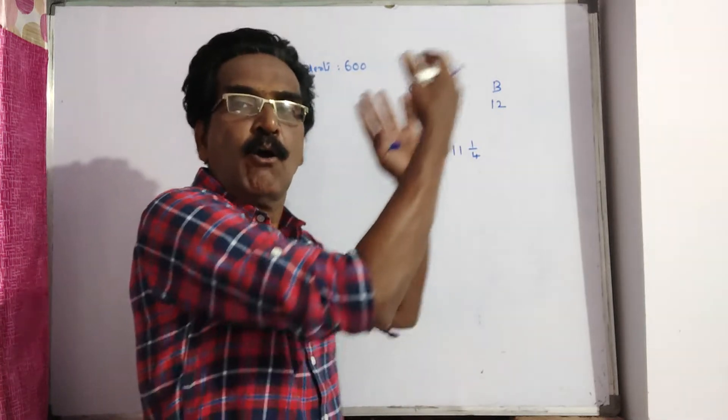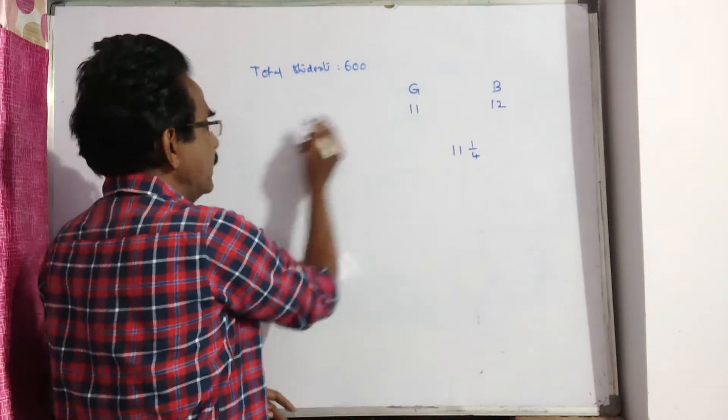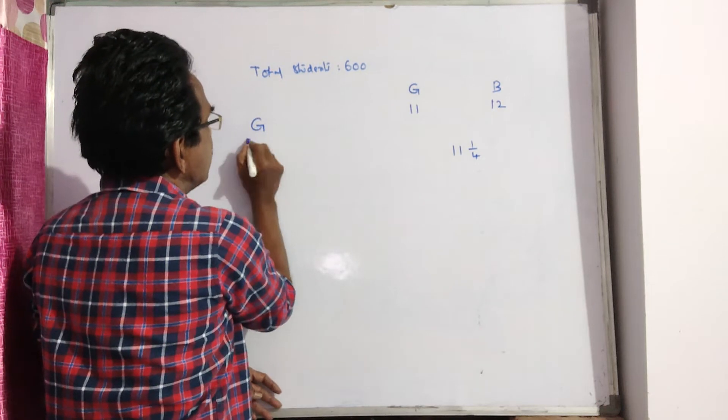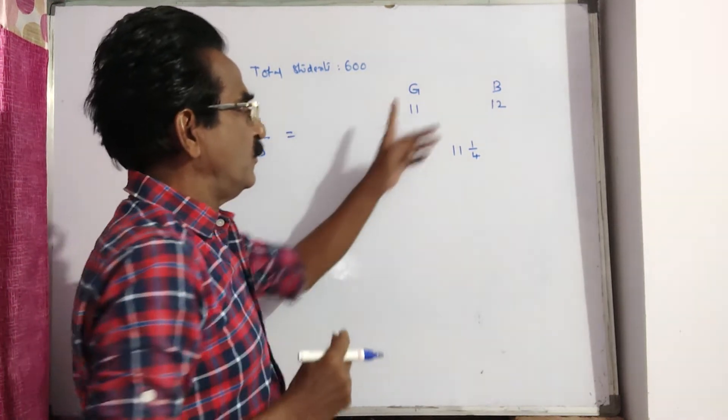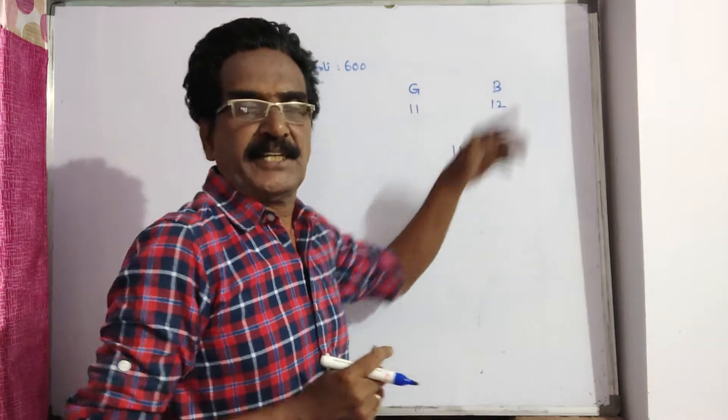That is how many girls were there, how many boys were there. See, girls is to boys. We get the ratio of these two things, quantities ratio.